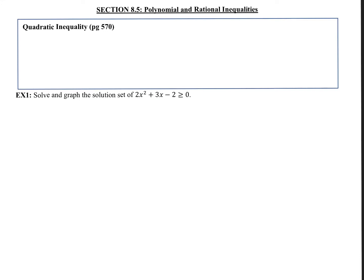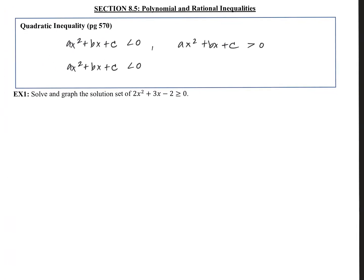Welcome to section 8.5, polynomial and rational inequalities. A quadratic inequality can be written in the form ax squared plus bx plus c, which is the normal form of a quadratic. This time we have the inequality less than 0, greater than 0, or the two options with equal to — so there are four technical options, all where a does not equal 0, meaning we need the x squared component for it to be quadratic.